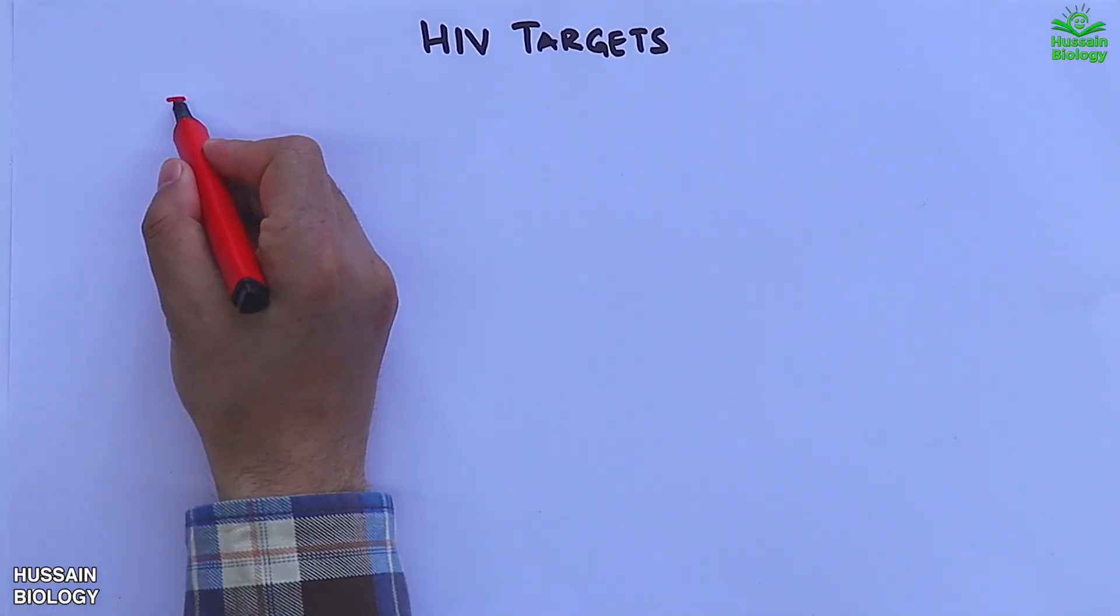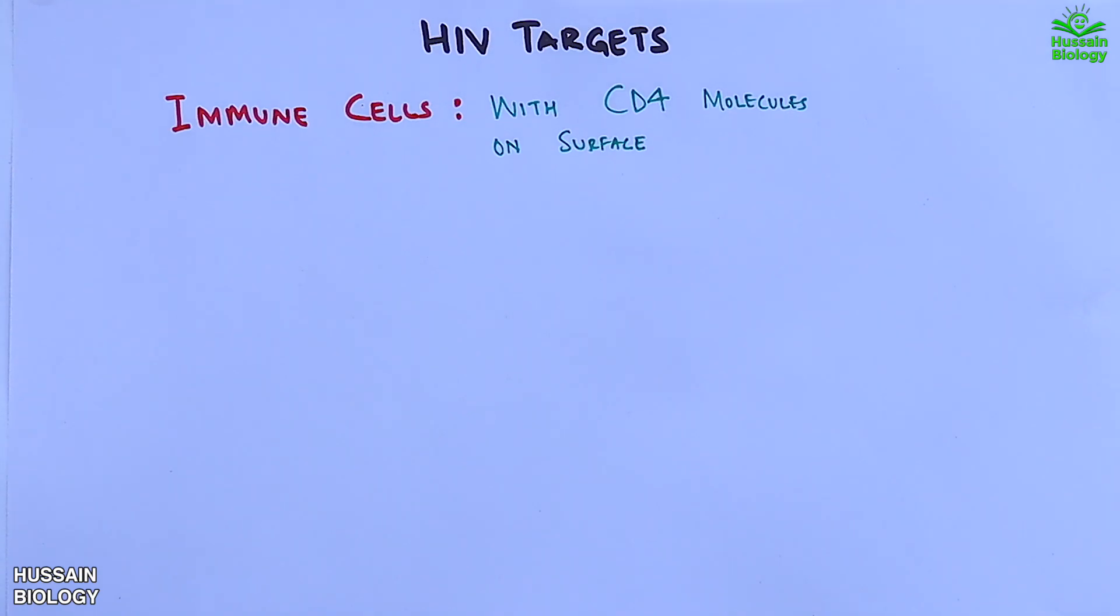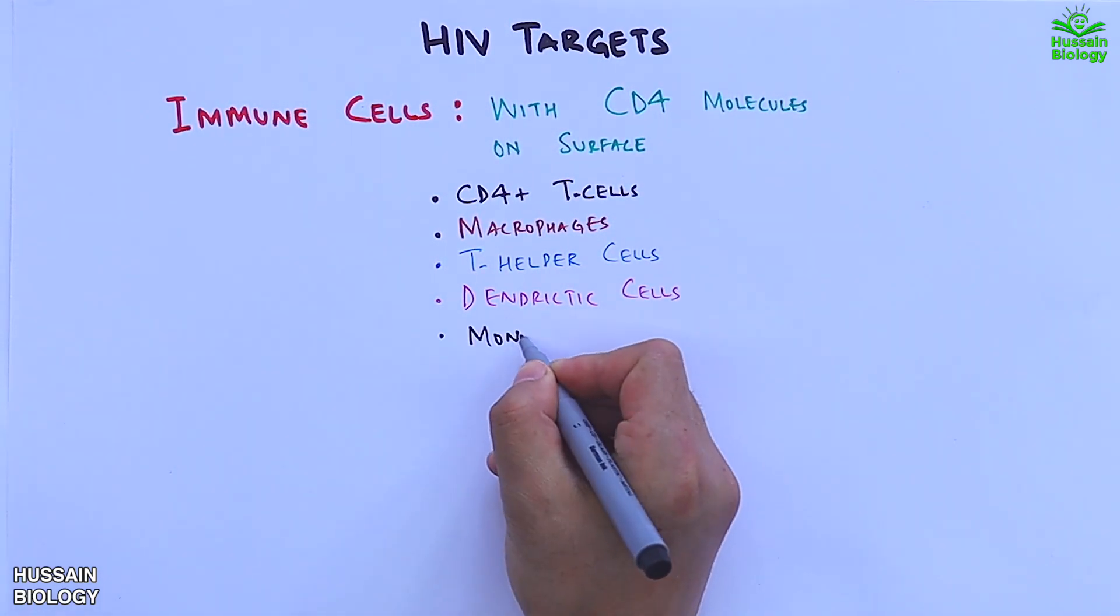HIV targets specific immune cells which have CD4 molecules on the surface of cells, like CD4+ T cells, macrophages, T helper cells, dendritic cells, and monocytes.